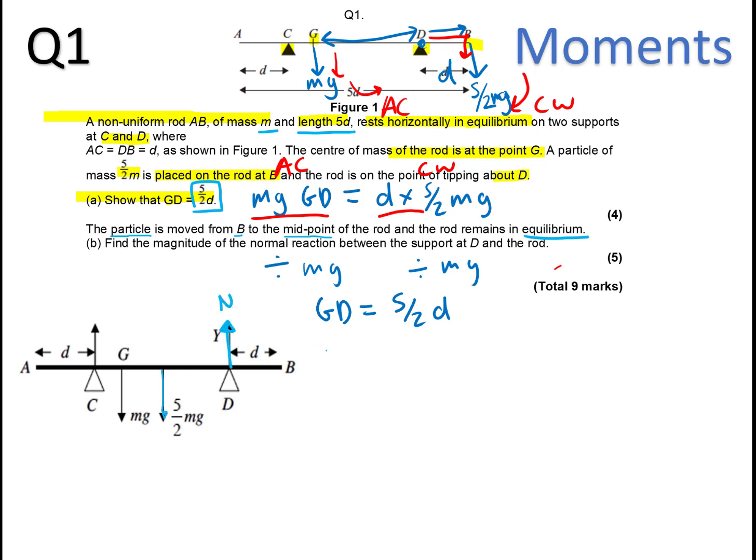Now it's in equilibrium, so the anti-clockwise movement is going to equal the clockwise movement. Now if you remember, if this is D and that is D, and the whole length is 5D, from here to here must be 3D. We don't know what that distance D stands for, but it doesn't matter. Now we can take, because we know GD here from part A was 5/2D, which is the same as 2.5D, we know this distance here must be 0.5D.